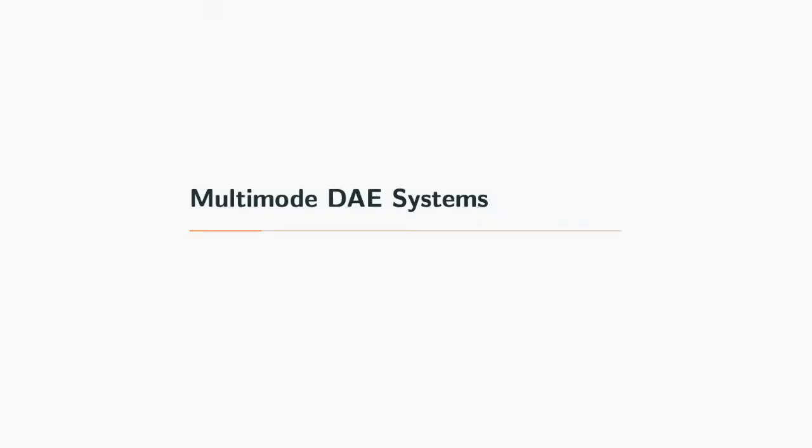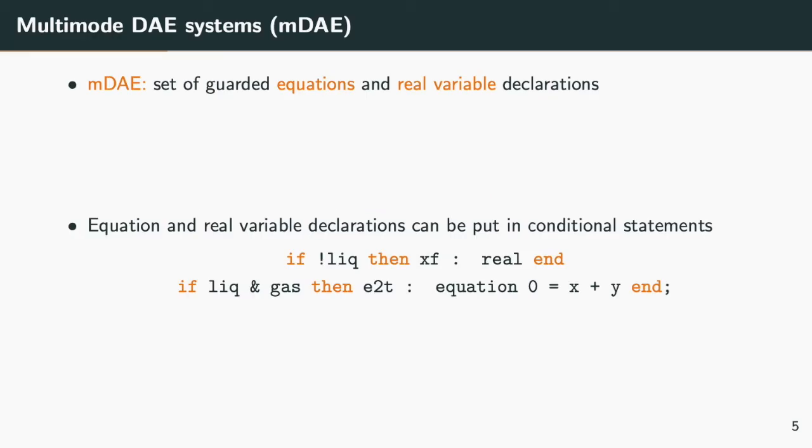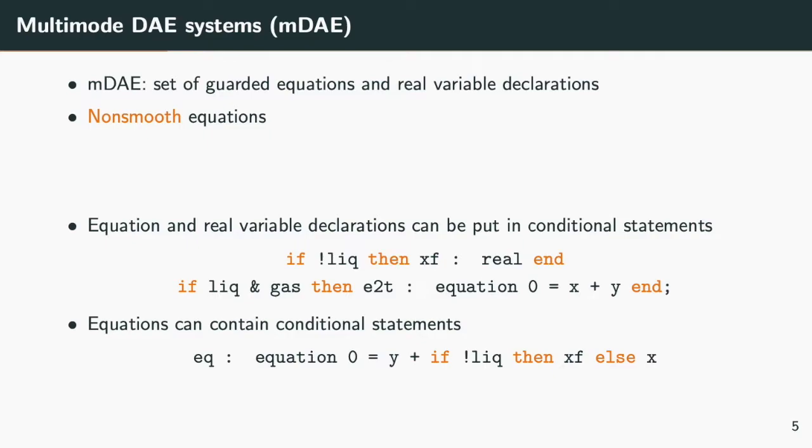Let us define what a multimode DAE is. A DAE system is a set of algebra differential equations on a set of unknown variables. A multimode DAE system is a set of guarded equations and of guarded real variable declarations. This means that both variable declarations and equations can be placed in if-then-else statements. The consequence is that some variables are defined only under some conditions, and the same for equations. Another possibility is to have non-smooth equations that contain if-then-else statements.